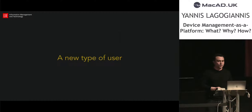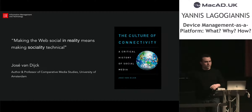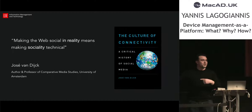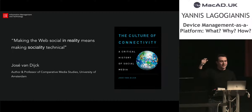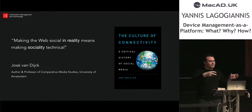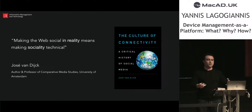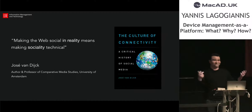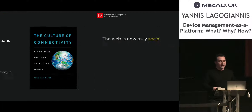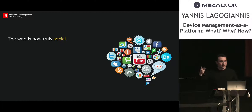A new type of user — what do we mean by that? I have a few book and paper references because it makes me look smarter than I am. Making the web social, which is something we have seen over the last 10 to 12 years, means we have moved to a state of technical sociality. People don't distinguish between using a computer to do work and using it to connect with their families or order groceries. The web is social whether in the context of work or outside it.